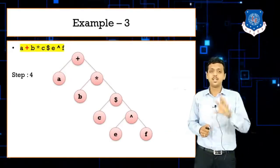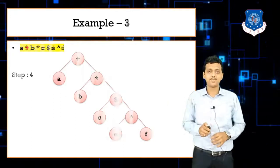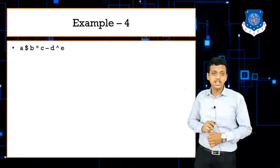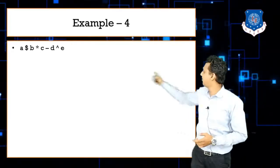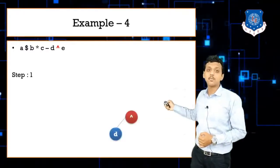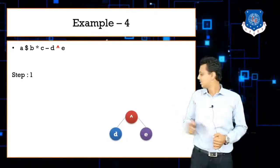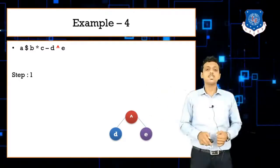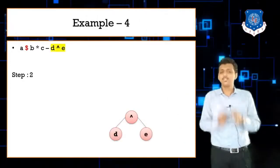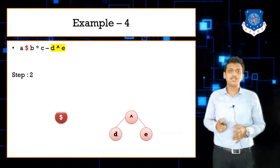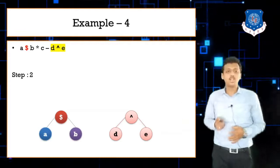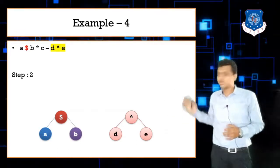Example four: a $ b * c - d ^ e. Following the right-to-left rule for exponential operators, we solve caret first: caret becomes the root with d on the left and e on the right. Then we solve dollar: a is left child, b is right child of dollar.